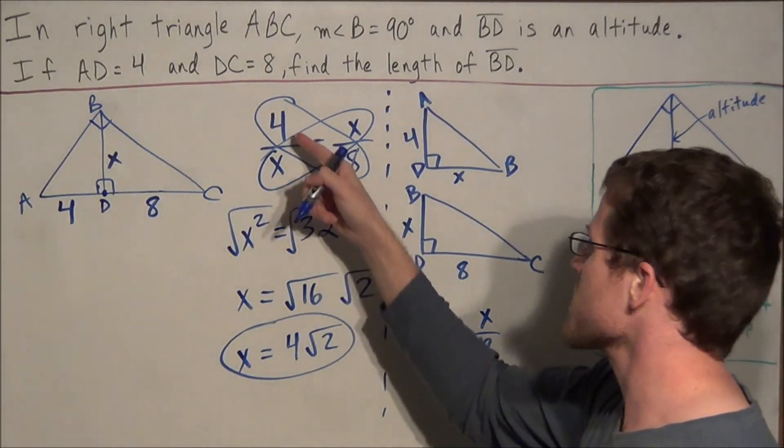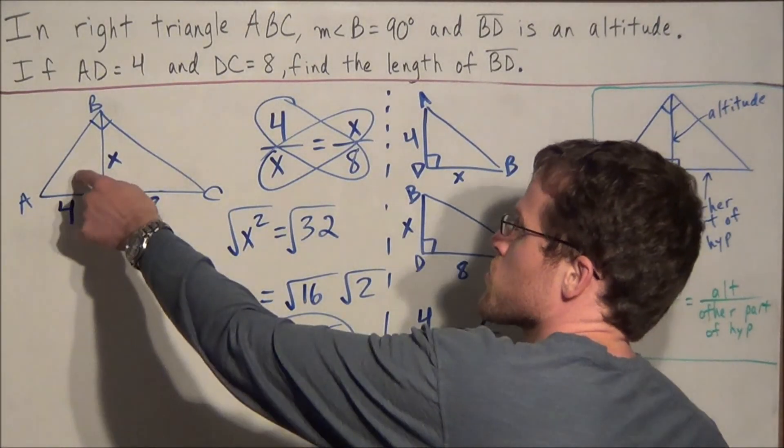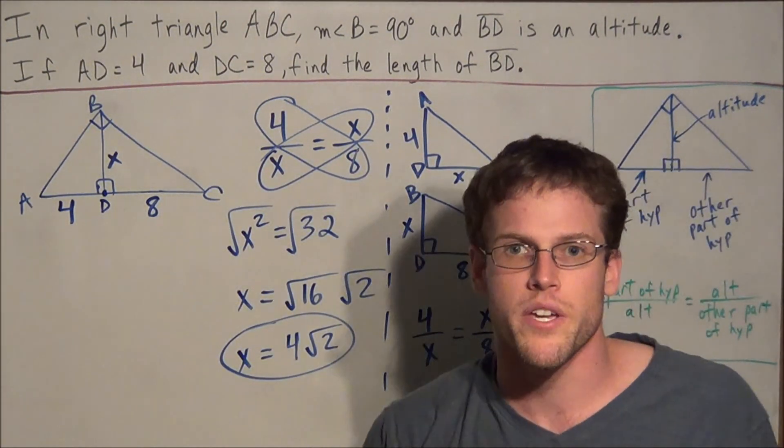So notice that we get the same proportion, but when we forget the rule, we have to be able to turn the small triangle on its side in order to match up so that they're in corresponding locations.